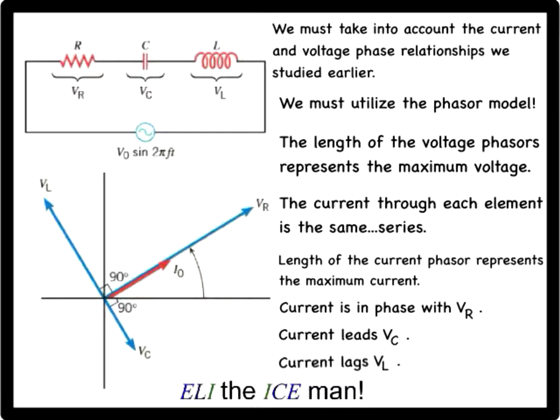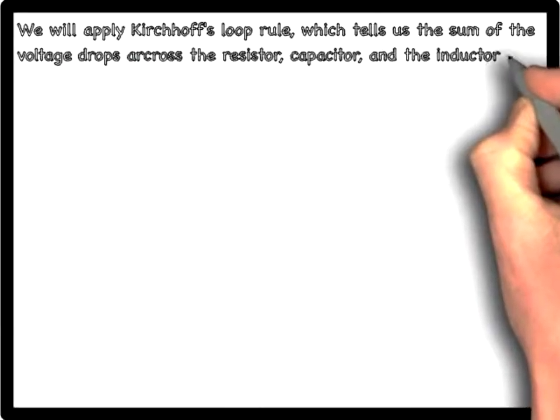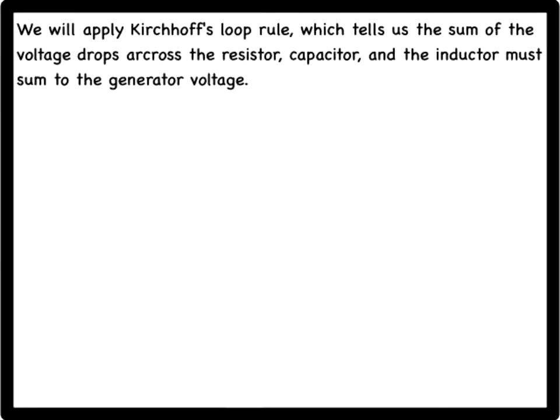To analyze the phasors in the figure, we're going to apply Kirchhoff's loop rule, where in an AC circuit this rule applies to the instantaneous voltages across each circuit component and the generator. The loop rule tells us the sum of the voltage drops across the resistor, capacitor, and the inductor must sum up to the generator voltage.